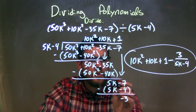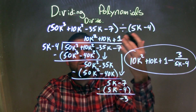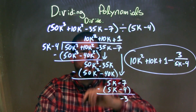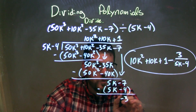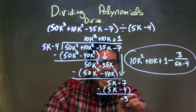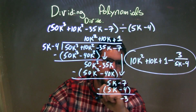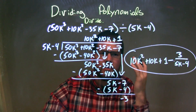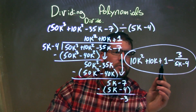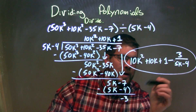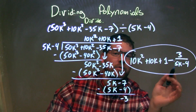Subtract the two and I had a positive 5k. Brought down the minus 7. Same question: what times 5k is 5k? Just a positive 1. Multiply 1 by 5k minus 4, I got 5k minus 4. Subtract the two and I got a negative 3 — that's my remainder. So my final answer is 10k² plus 10k plus 1, minus the remainder 3 over my divisor 5k minus 4.